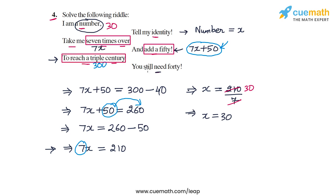And to reach a triple century, you still need 40. Yes, because 260 is 40 less than 300. So, the answer is the number is 30. The required number is 30. And this completes question 4.